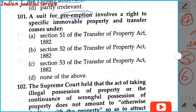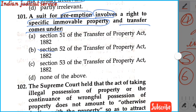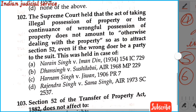Question number 101: The suit for pre-emption involves the right of specific immovable property and transfer comes under section 52. Our answer is option B.